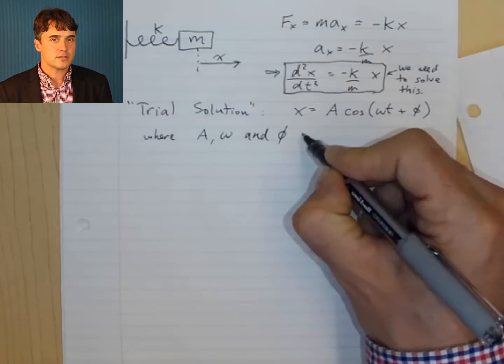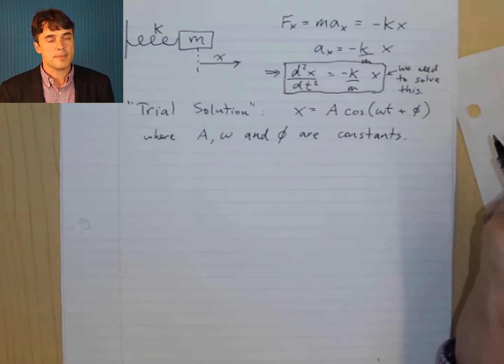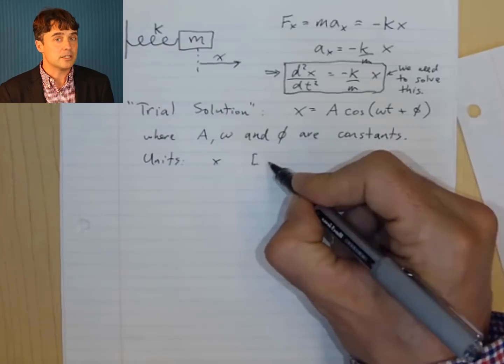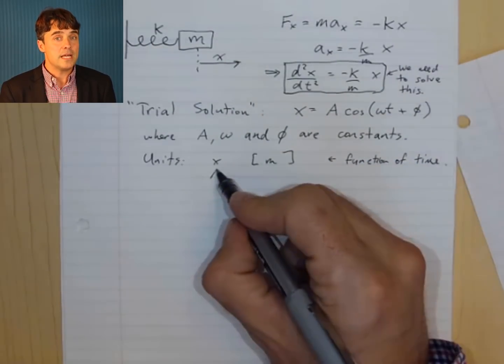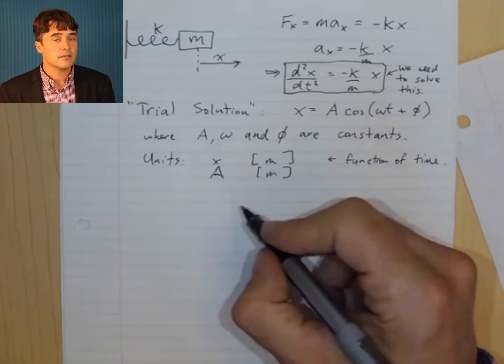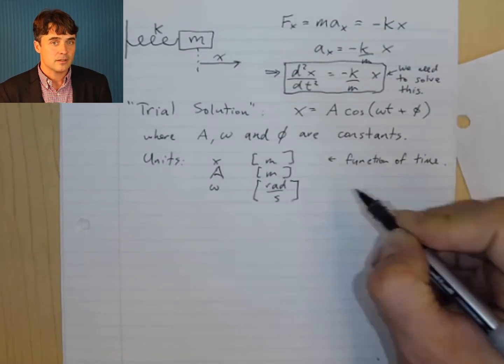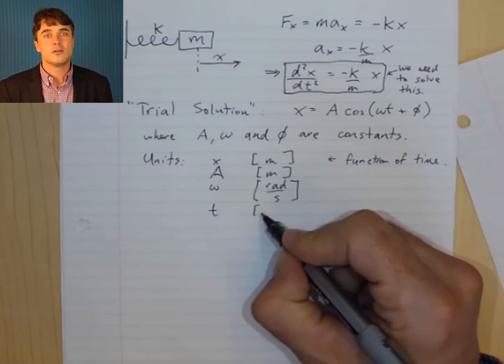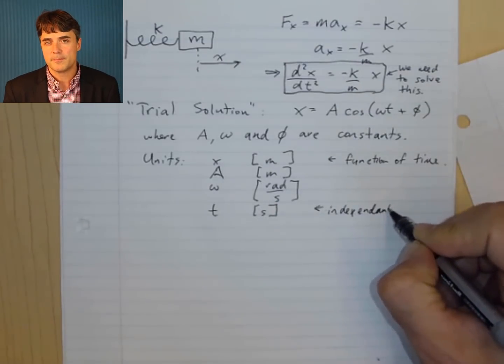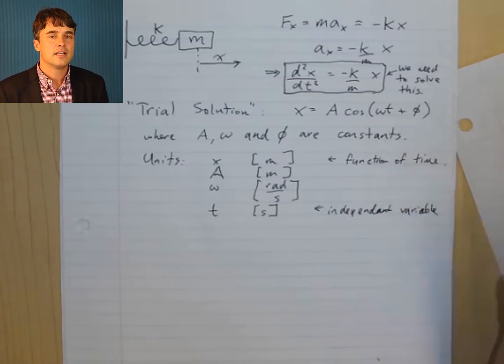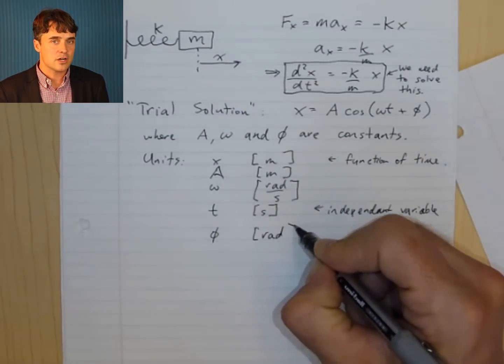Let's write down the units of all the symbols in this equation. x is in meters, and it's a function of time. A is also in meters, and it's a constant. Omega is in radians per second, and it's a constant. Lowercase t is in seconds. We call this the independent variable. Phi is in radians, and it's a constant.